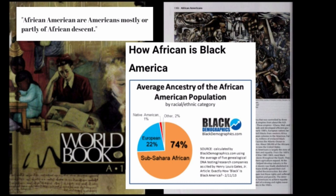African Americans are Americans mostly or partly of African descent. The average ancestry of the African American population by racial/ethnic category, sourced from Black Demographics, was calculated using the average of five genealogical DNA testing research companies, as cited by Henry Louis Gates Jr.'s article 'Exactly How Black is Black America,' dated February 11th, 2013: 74% Sub-Saharan African, 22% European, 2% other, 1% Native American.